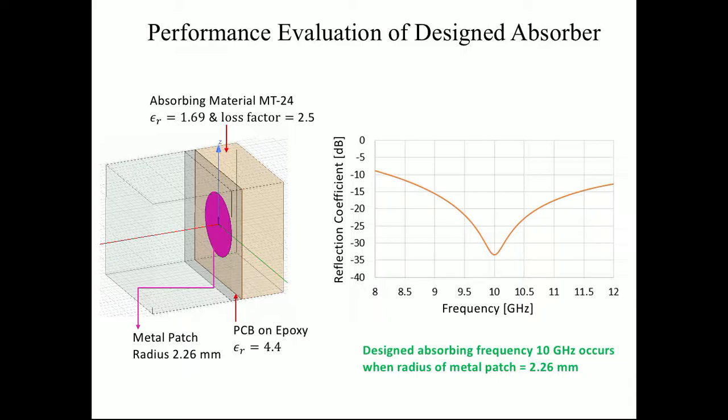Performance evaluation of a design absorber: Since we found out that our metal patch radius needs to be 2.26, our absorber material, MT24, epsilon r is 1.69 and a loss factor of 1.622. And our PCB on epoxy epsilon r is 4.4. As you see in the graph, design absorbent frequency of 10 gigahertz occurs when the radius of the metal patch is 2.26, as seen here with dB.